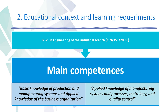Engineers of industrial branches — like mechanical engineers, electrical engineers, and electronic and automation engineers — should be familiar with Six Sigma tools because these are very necessary in the industrial context. For these reasons, the competences established for these studies are indicated in the normative, covering basic knowledge of production and manufacturing systems, applied knowledge of business organization, manufacturing systems and processes, metrology, and quality content.